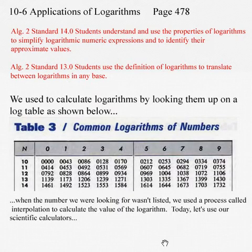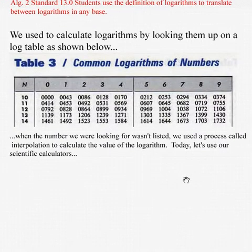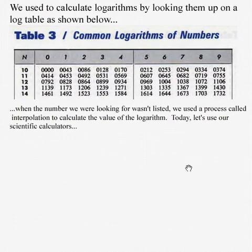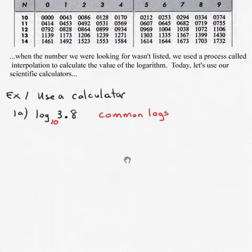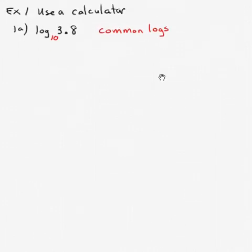Now, in the old days, we would calculate logarithms by looking them up in a table. And there is a table in the back of your book, should you care to look them up. But the number typically wasn't listed because we only had numbers between 1.00 and 9.99. So today it's much more efficient if we use our scientific calculators, and that's how we're going to approach this. So have your scientific calculators handy.